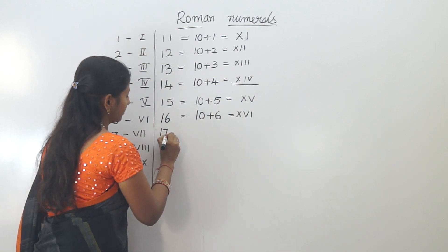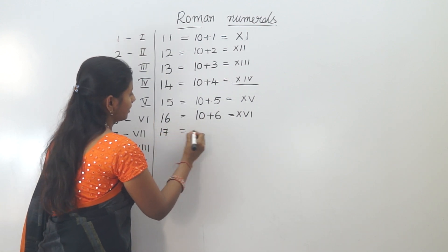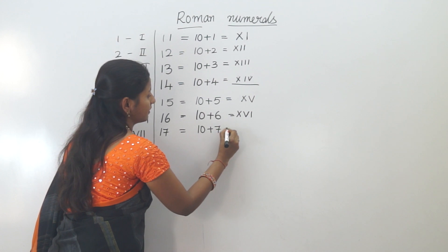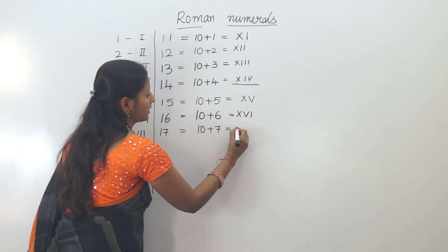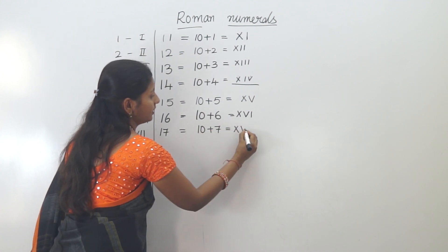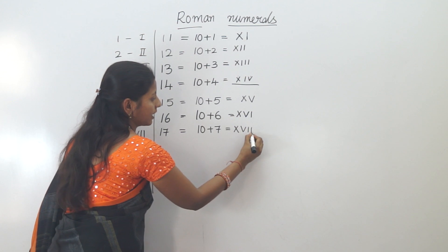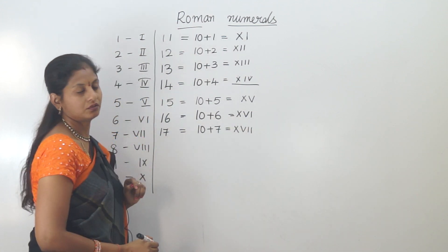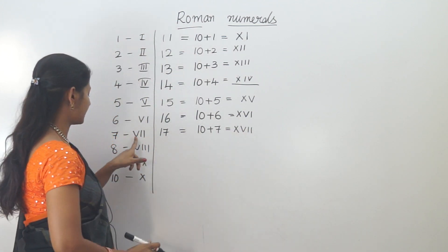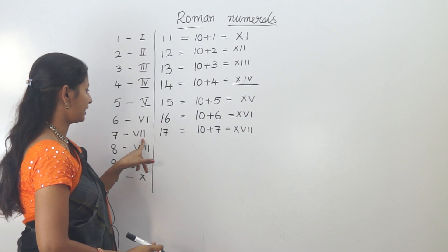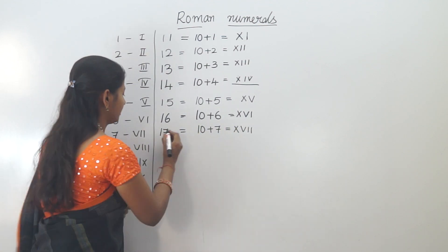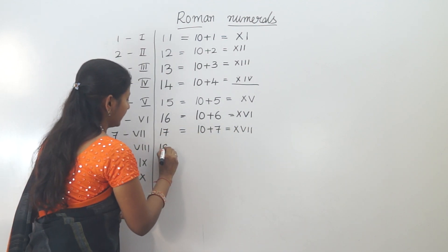Next, 17. Seventeen expanded is 10 plus 7. Ten is X. Seven is 5 plus 2, so we write V, I, I. That means XVII equals 17. Next, 18.